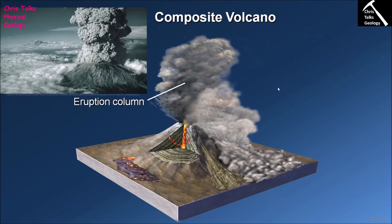Typically when a composite volcano erupts, you will often get an eruption column, also sometimes called a plinian column, and this is a mixture of dust, ash, and superheated gases. The dust comes from the destruction of pre-existing volcanic rock when the volcano erupts — when we have this explosion, the rock that was already there gets destroyed and thrown up as part of the eruption column.